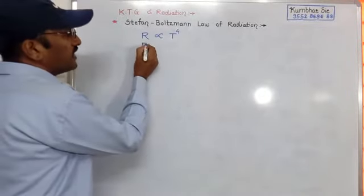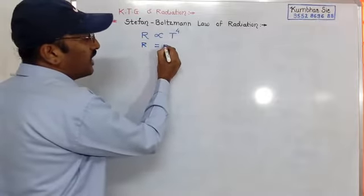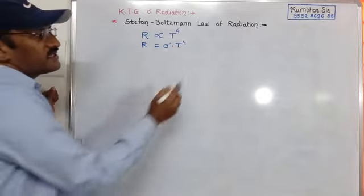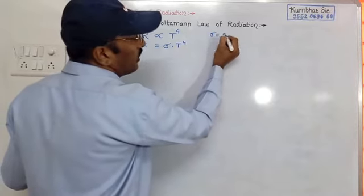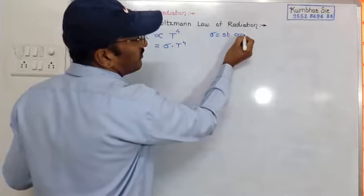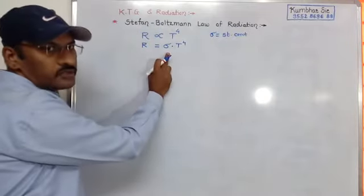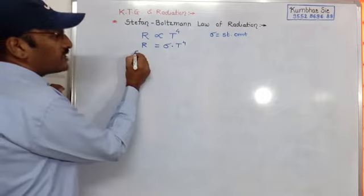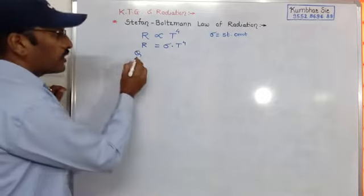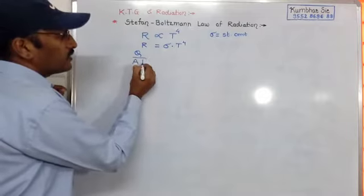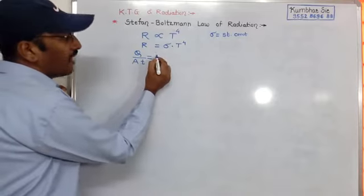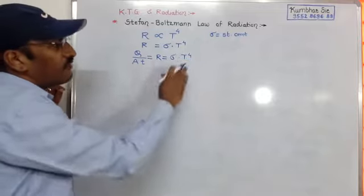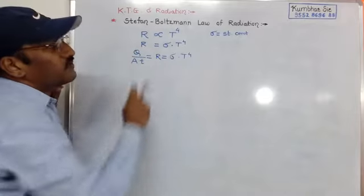To remove the proportionality, a constant sigma is introduced, giving R = σT⁴, where sigma is the Stefan's constant. The emissive power R is the amount of heat radiated by the body per unit area per unit time, equal to σT⁴. This is the formula of Stefan's Boltzmann Law.